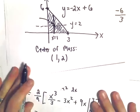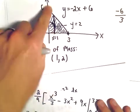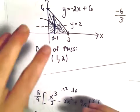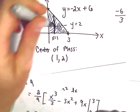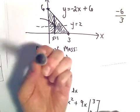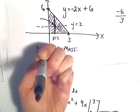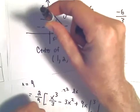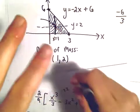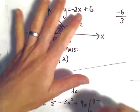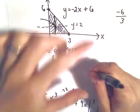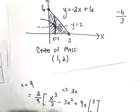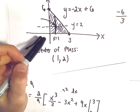You can think about this as if this was a little piece of metal. If you stuck your pen right underneath the center of mass at the point (1, 2), this triangular region would balance perfectly on that one point. It's kind of like finding the center of a record.